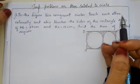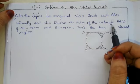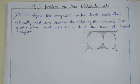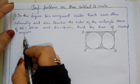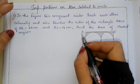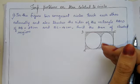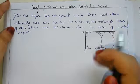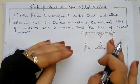In the figure, two congruent circles touch each other externally and also touch the sides of rectangle ABCD. If AB equals 28 cm and BC equals 14 cm, find the area of the shaded region. ABCD is a rectangle and from the given figure we can see which part is shaded.